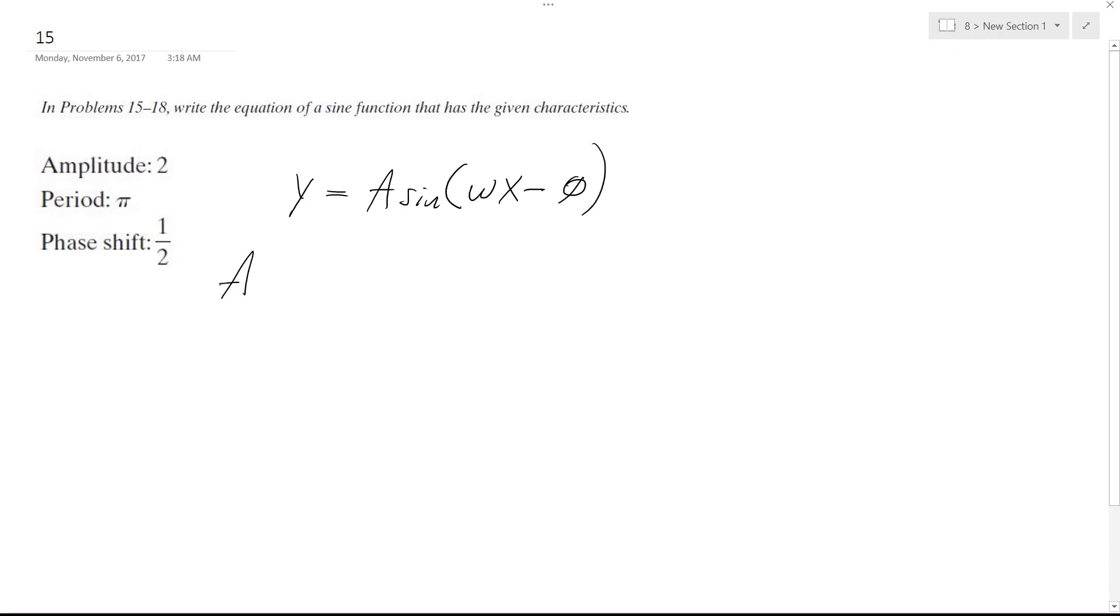Amplitude's easy enough. A is just going to equal 2, and I'll rewrite this once I have a complete period.